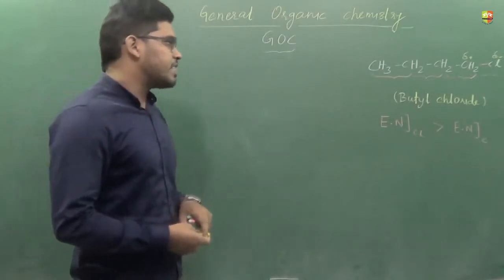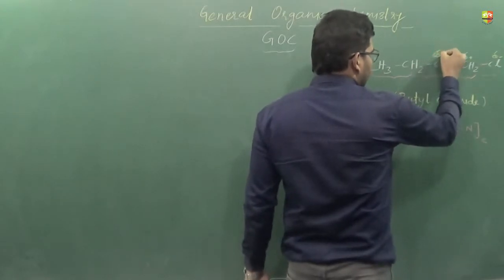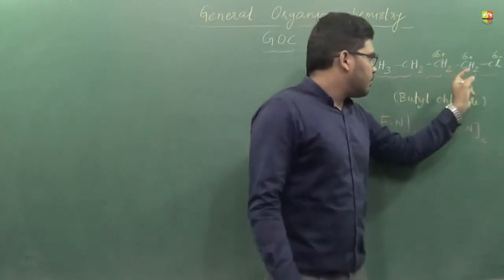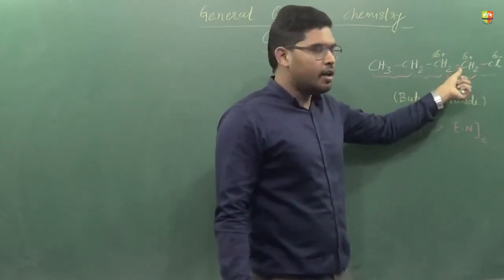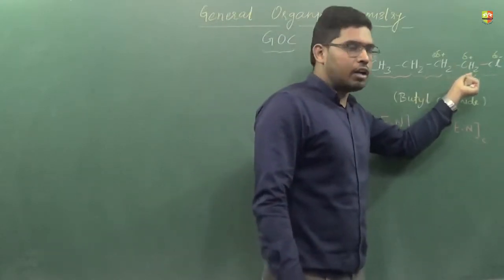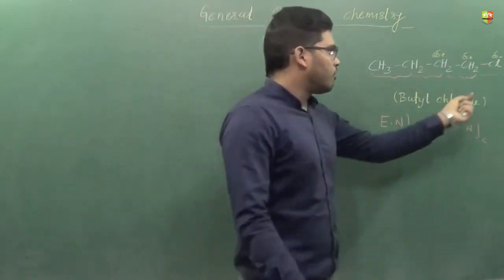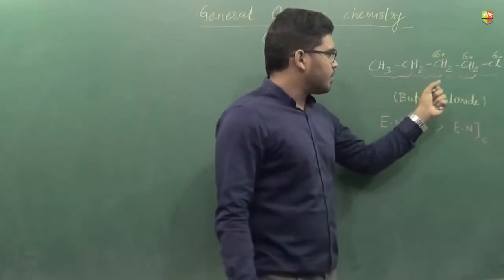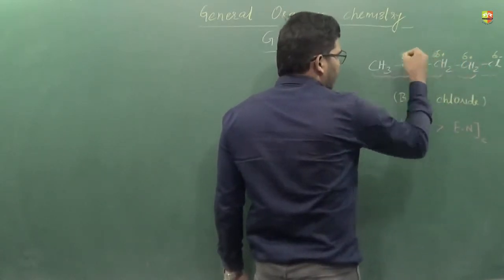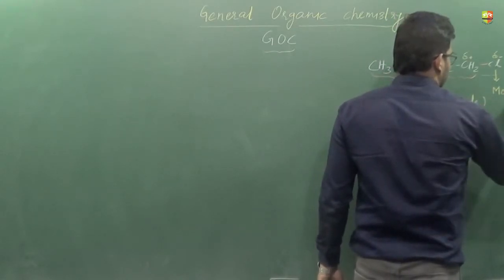This carbon becomes partially positive, but this positive charge is lesser than the partial positive charge on the carbon directly bonded to chlorine. Because of that charge, it is slightly electron deficient, but compared to chlorine, it is not as electron deficient. We can say its electronegativity increases a bit, but that electronegativity is still lesser than that of chlorine. That is why it attracts the bond pair of electrons, but not to the same extent as chlorine. As we move away from the more electronegative element, the positive charge characteristics keep on decreasing.